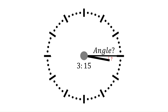First, let's address the common misconception. If the time is 3:15, shouldn't the hour hand point to 3 as well? If this were the case, both the hour and minute hands would be on top of each other, and so the angle between would be 0 degrees. However, in reality, the hour hand doesn't just jump to 4 o'clock — it slowly makes its way around over the hour.